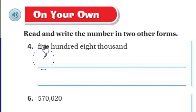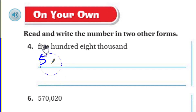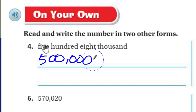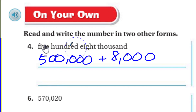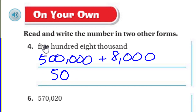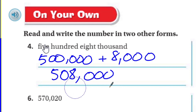Number four: the word form is five hundred eight thousand, so I write 508,000. Expanded form: 500,000 + 8,000. Standard form: 508,000 — make sure to include the comma and three zeros, otherwise it would just be 508.